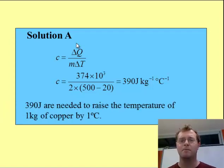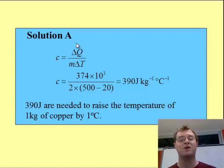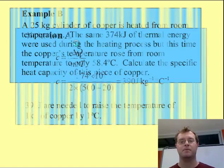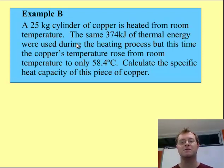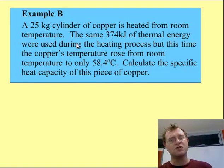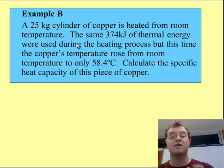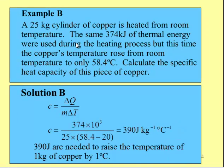Let's consider another problem. This gives us the specific heat capacity of copper as 390 joules per kilogram per degree temperature. This time, I've been given a 25 kilogram cylinder of copper heated from room temperature, and it required 374 kilojoules of energy — but this time the temperature of the copper only rose to 58.4 degrees centigrade. Calculate the specific heat capacity. You've recognized this is a trick question — you already know the answer, because even though the mass has changed, the specific heat capacity of copper is always a constant. Going through this calculation, I get 390 joules per kilogram per degree centigrade as the specific heat capacity of copper.